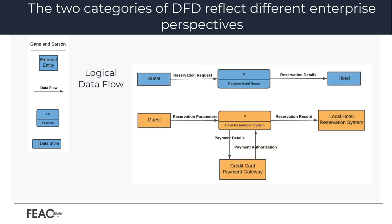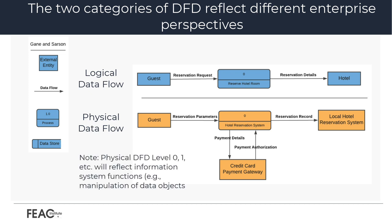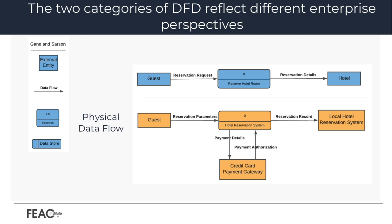If we re-examine our earlier example, we can see that it is focused on what needs to happen with regards to information flow as a part of 'reserve hotel room.' Conversely, we show a supporting physical DFD context diagram below it. Notice that the concept of guest has not changed, but the process at the context level is now identifying a system — in this case, the hotel reservation system. The hotel entity is now the local hotel reservation system, and a third external entity has been introduced: the credit card payment gateway. Notice that the information flows are focused on record and information-related exchanges. The rules for developing a physical DFD are no different than a logical DFD; instead, it is a matter of maintaining the appropriate perspective.